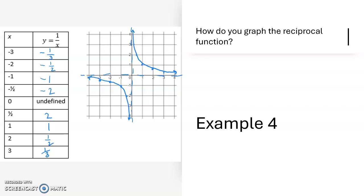This particular function doesn't cross its asymptotes — you can see it's getting closer and closer to those asymptotes without ever actually crossing them. It also has a gap at x equals 0; there is no value for the function at x equals 0.